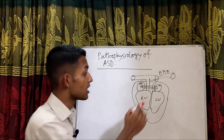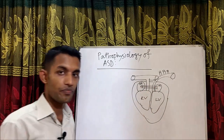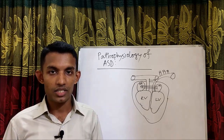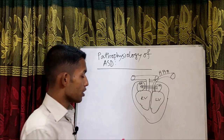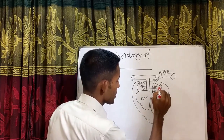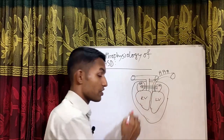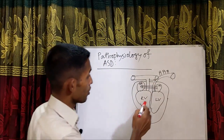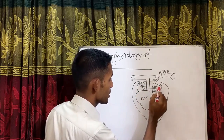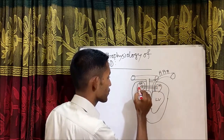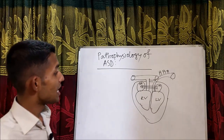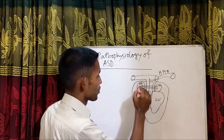In ASD, the shunt is a left-to-right shunt, and ASD is called an acyanotic congenital heart disease. This is because in the left atrium there is oxygenated blood and in the right atrium there is deoxygenated blood. In ASD, blood goes from left atrium to right atrium — that means oxygenated blood is going and mixing with deoxygenated blood, so there is no cyanosis.